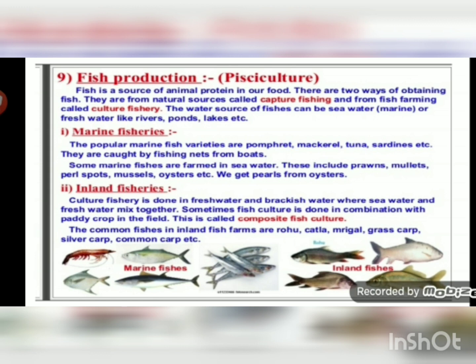Marine fish varieties include pomfret, mackerel, tuna, and sardines, caught by fishing nets from boats. Some marine fishes are farmed in sea water, including prawns, mullets, pearl spots, mussels, and oysters. We get pearls from oysters — real pearls are produced by oysters, not made from plastic or glass. Oyster farming is a kind of culture fishery done in salty water, called mariculture.